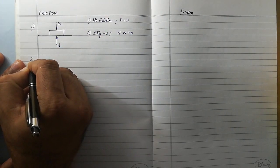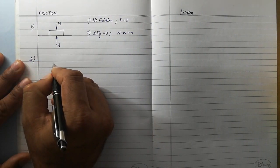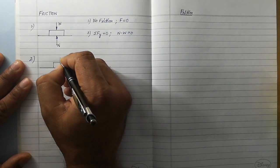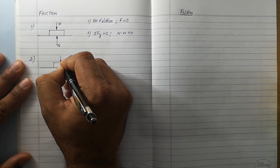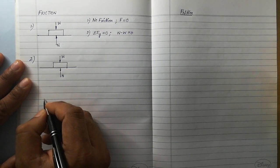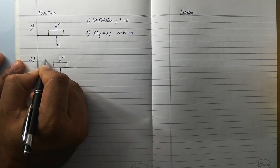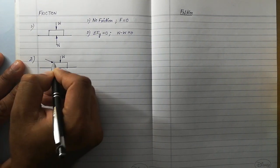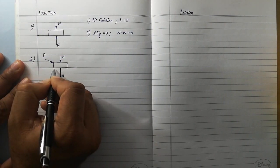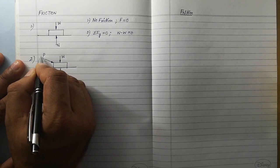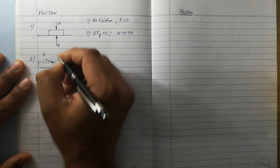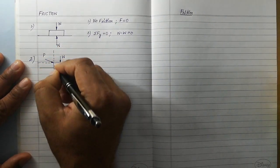Now let us consider the second case. In the second case, the same body is resting on the surface. The first two forces are the weight of the body acting in the downward direction and the normal pressure. Then suppose we apply one force on this body — let me name that force as P — acting at some angle to the horizontal. Resolving this force into its components: one component is along the surface and the second component is normal to the surface.